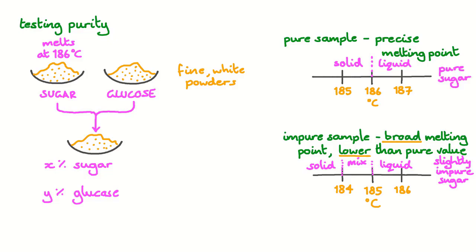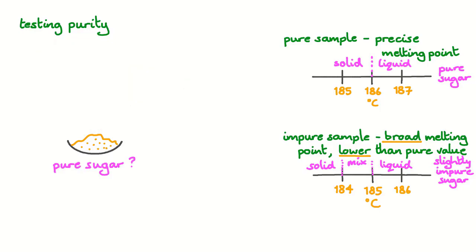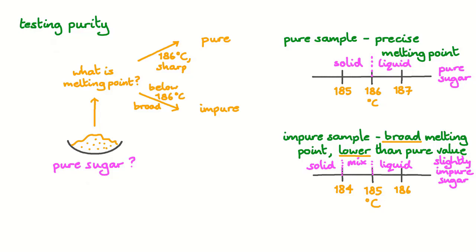Here, we've looked at sugar and slightly impure sugar, but we could have looked at glucose and we'd see the same effect — the melting point of an impure mixture being slightly lower than the melting point of pure glucose. All this means that we have a simple test. If we have a sample we think is pure, its melting point should be exactly that of the pure chemical. So if we test the melting point of a sample we think is pure sugar, if it's 186 degrees Celsius and it's a very sharp melting point, then we're probably dealing with pure sugar. If, however, the melting point is below 186 degrees Celsius and it's quite broad, then we're probably dealing with impure sugar and we'll need to do other tests to determine what the impurities are.